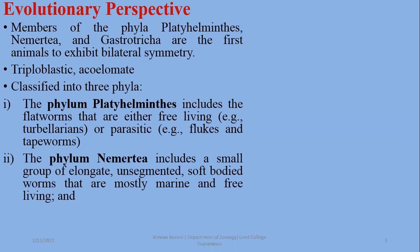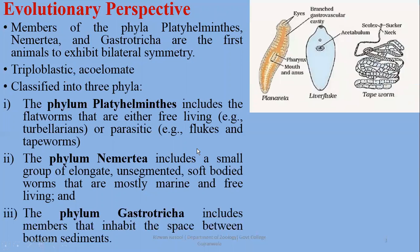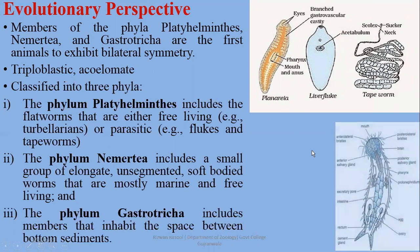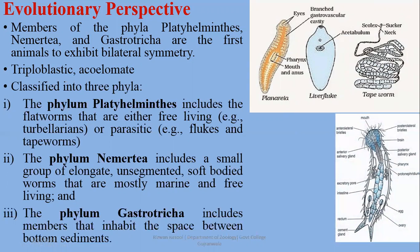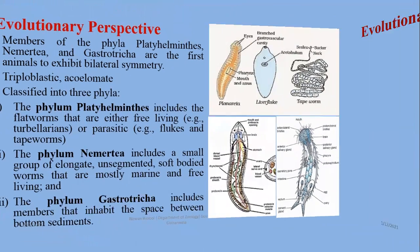Phylum Nemertia is a small group of elongate, unsegmented, soft-bodied worms that are mostly marine and free-living. Phylum Gastrotrica includes members that inhabit spaces between bottom sediments in water. Representative members of Phylum Platyhelminthes include Planaria, liver fluke, and tapeworms, which we will study in detail in the next lectures.